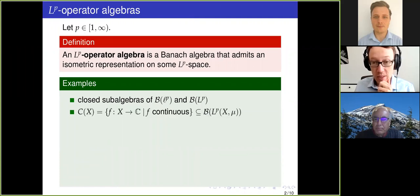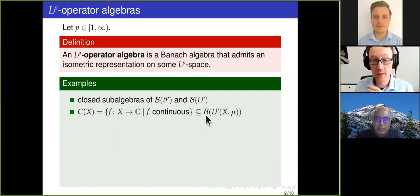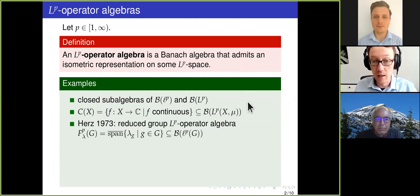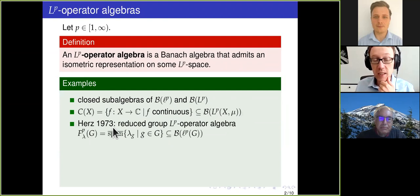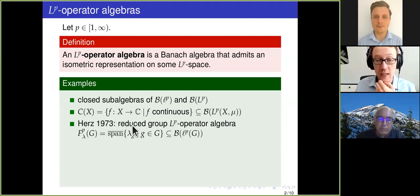More interestingly, more concrete classes of Banach algebras that we can represent like this are the commutative C-star algebra C(X), which are the continuous functions on some compact Hausdorff space, represented as multiplication operators on a suitable LP space. More interesting are the group algebras that we get from a discrete group G. These were first introduced by Herz in the 70s and are massively studied in abstract harmonic analysis.